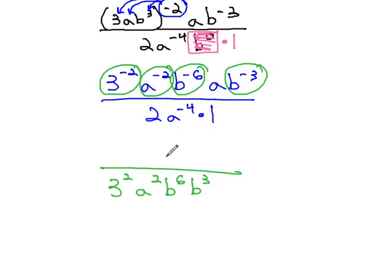The a, however, did stay in the numerator. Then in the denominator, we also saw an a^(-4), so that a^(-4) moves up, and the 2 times 1 will stay in the denominator.